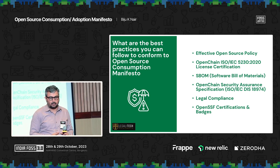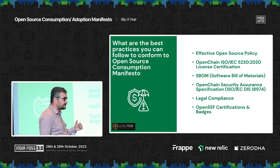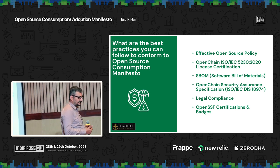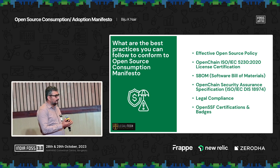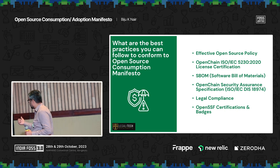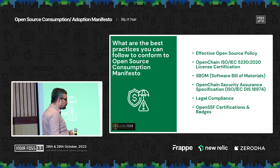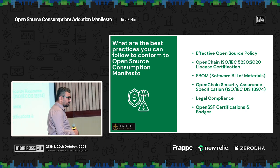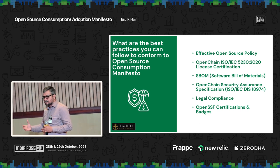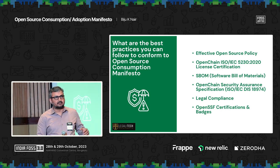Coming to other global best practices: you should also be doing legal compliance. OpenChain is a great place for legal compliance — having an open source policy, looking for licenses, doing code analysis and license checks. Even in SPDX, some of the license checks are already done at the bill-of-materials level. Another good initiative is the Open Source Security Foundation (OpenSSF), which is again a Linux Foundation project. After incidents like Colonial Pipeline, Log4j, and NPM vulnerabilities, the foundation has come forward.